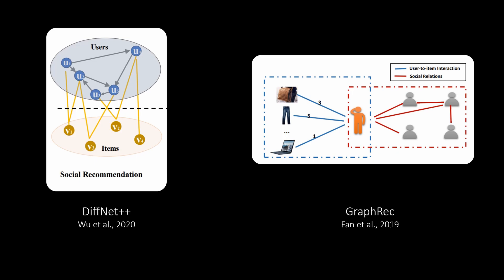Two popular papers in this field are DiffNet++ and GraphRec. Both of them apply separately for the social space and the user item network, graph attention layers to capture the information of the neighborhood. In the end, those vectors are simply concatenated and used to predict the ratings.